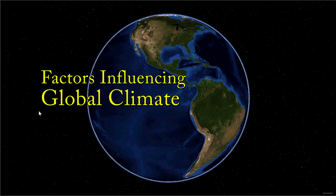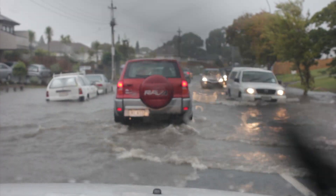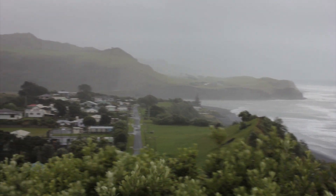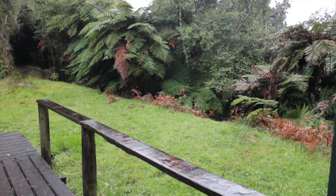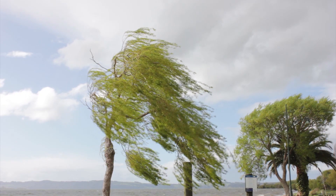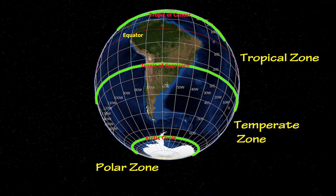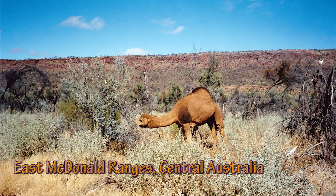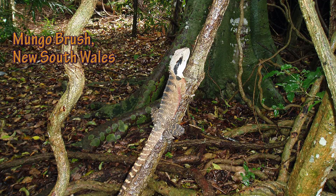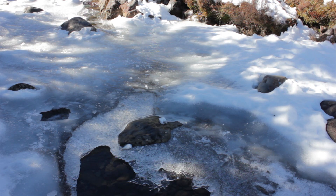Climate refers to the prevailing average weather patterns of a region over a long period of time, for example over a 30 to 50 year period. Weather is the daily atmospheric conditions consisting of precipitation, temperature, humidity, wind and sunshine. Around the world there are different climate zones. In some regions there are hot and dry deserts, in other places there are warm and wet tropical rainforests, while other places are covered in ice. Why is this so?